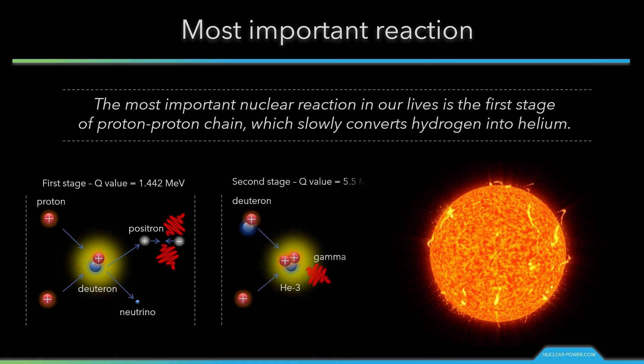The Q value for the deuteron-producing reaction is plus 1.442 megaelectron volts. The deuteron produced in the first stage can then fuse with another proton to produce the isotope of helium-3. The Q value is 5.5 megaelectron volts. This second process is mediated by the strong nuclear force rather than the weak force. Therefore, it is extremely fast in comparison to the first step. It is estimated that each newly created deuterium nucleus exists for only about one second before it is converted into helium-3. Helium-3 is then in various branches converted into helium-4.